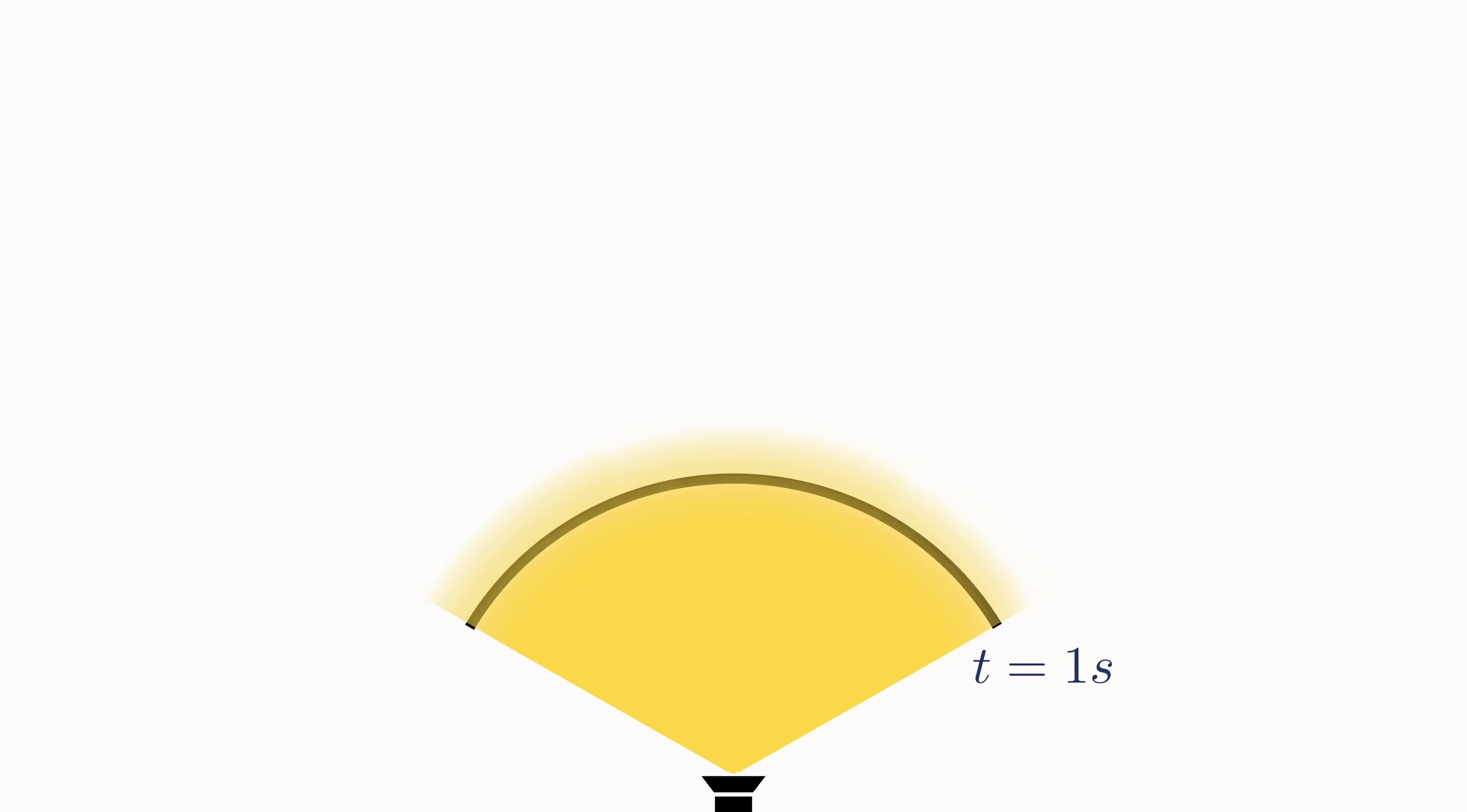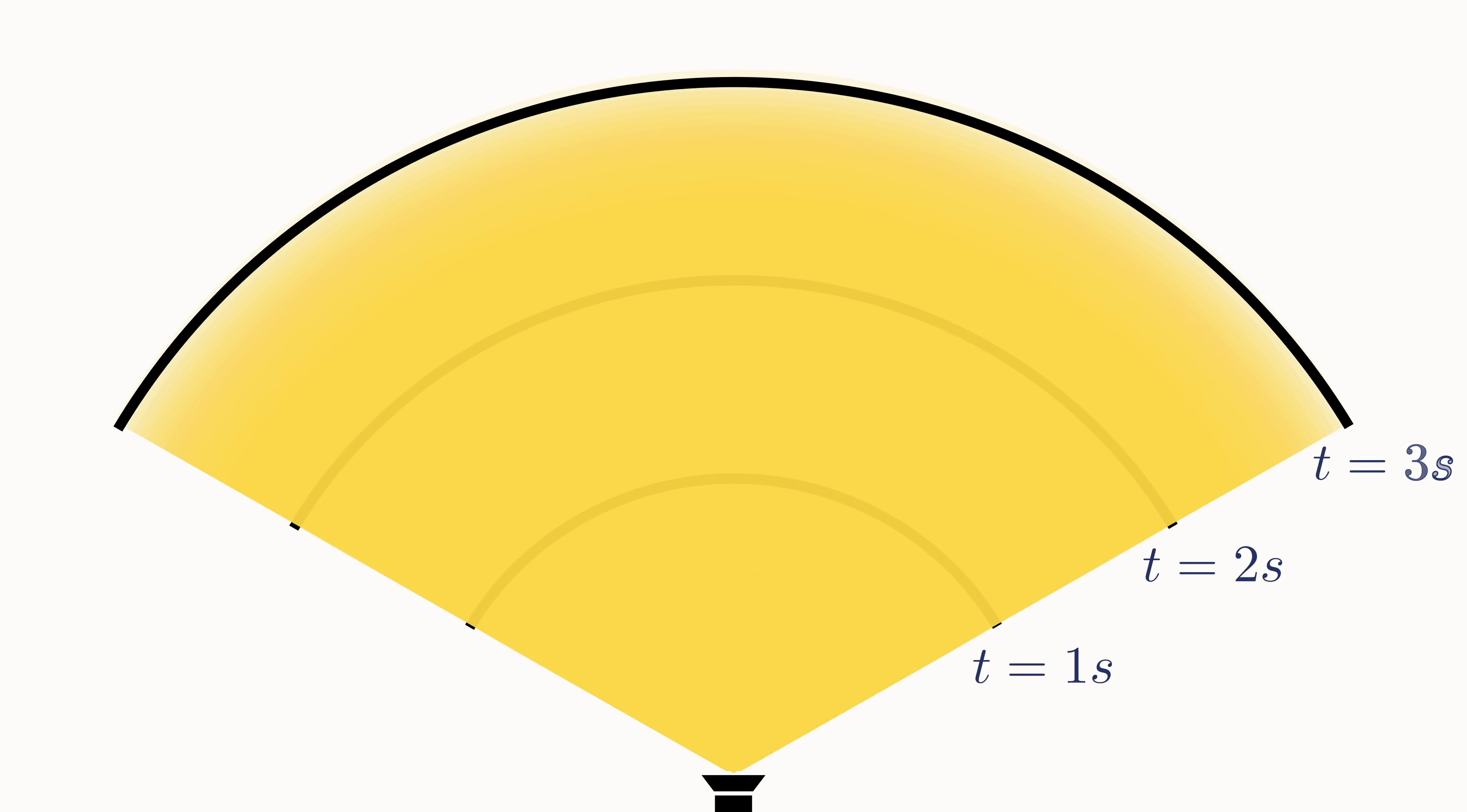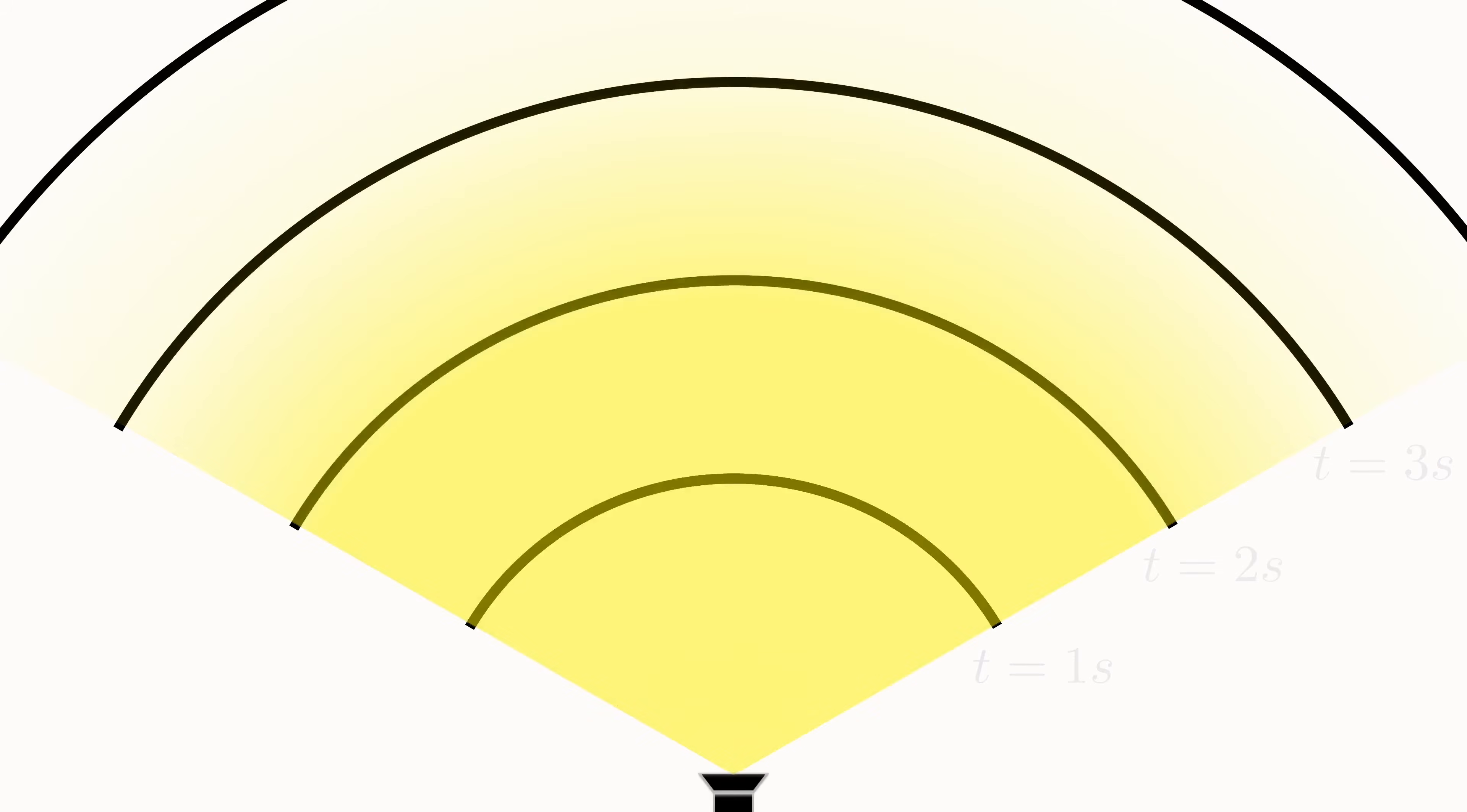If we let another second pass, the light travels further and we mark a second wave-front, consisting of all the points the light travels to in two seconds. We could, of course, keep repeating this process. And also consider wave-fronts for arbitrary time spans.